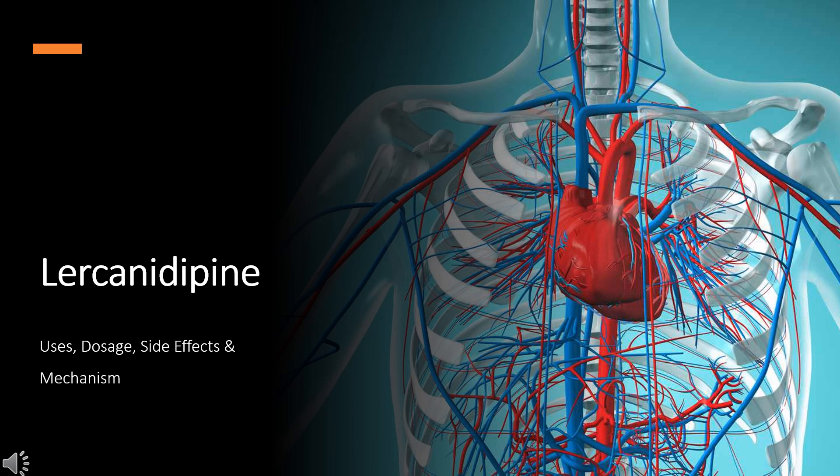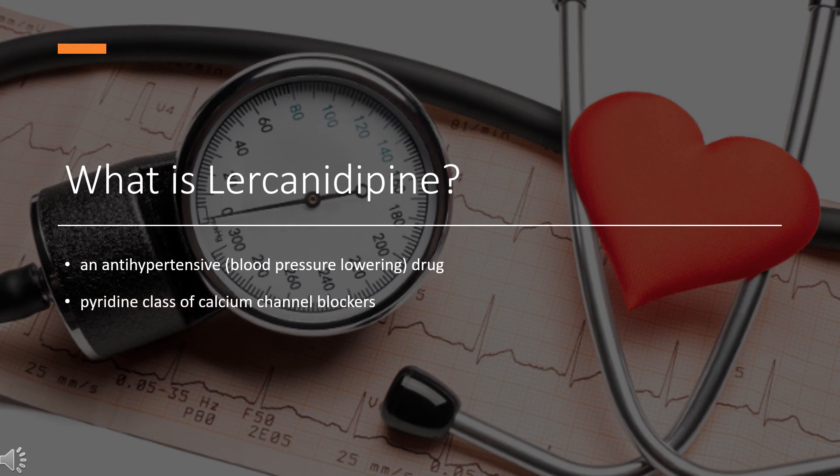Lercanidipine, trade name Xanadip among others, is an antihypertensive, blood-pressure-lowering drug. It belongs to the dihydropyridine class of calcium channel blockers, which work by relaxing and opening the blood vessels, allowing the blood to circulate more freely around the body. This lowers the blood pressure and allows the heart to work more efficiently. It was patented in 1984 and approved for medical use in 1997.